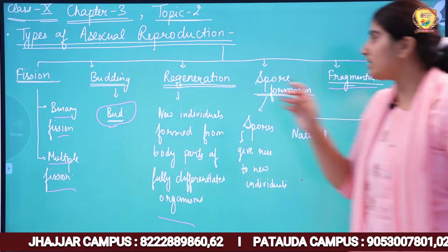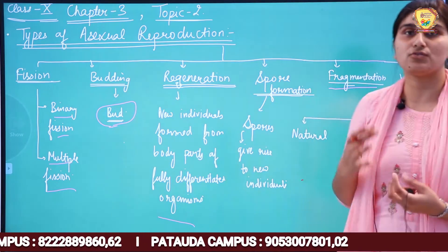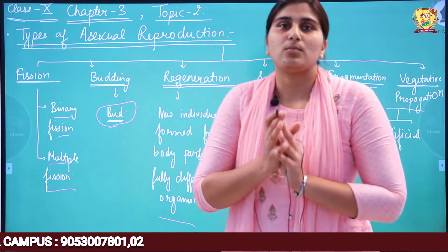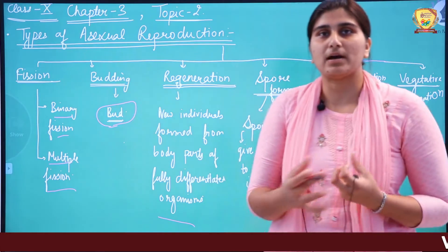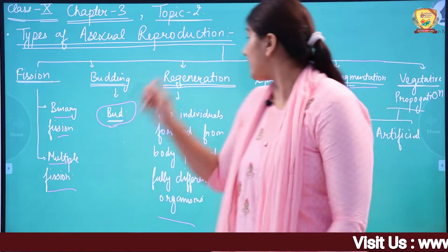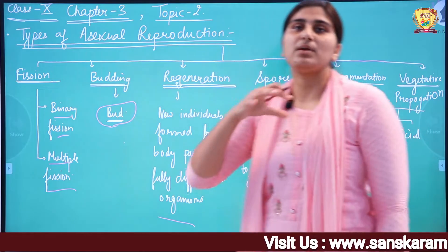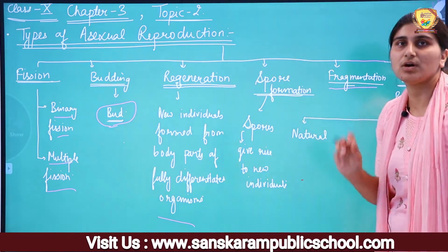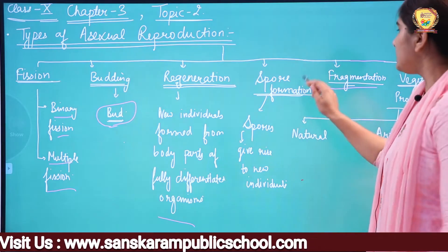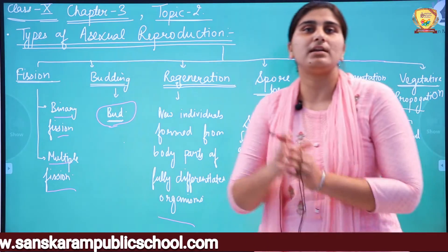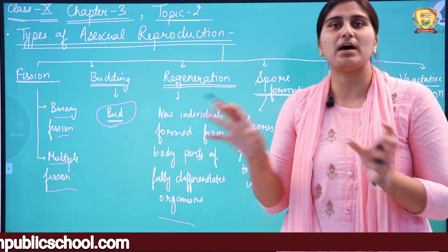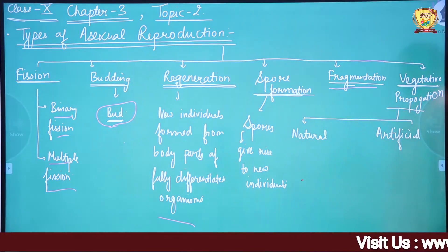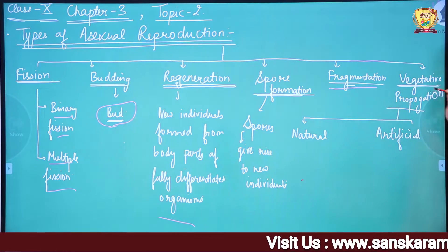Next is Fragmentation. Fragmentation and Regeneration might confuse you, but they shouldn't. In Fragmentation, the parent body divides into two, three, or four parts, and each part forms a new individual. In Regeneration, only one part detaches from the parent body and forms a new individual. In Fragmentation, the parent body is completely lost — it breaks into fragments, and each fragment forms a new individual.